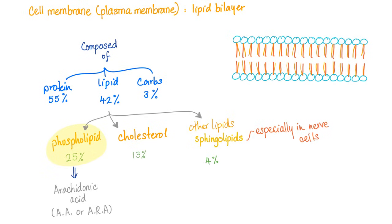As you know, the lipid bilayer plasma membrane, or cell membrane, is composed of proteins, lipids, and carbohydrates. Lipids such as phospholipids, cholesterol, and other lipids such as sphingolipids — especially in nerve cells. The phospholipids form the arachidonic acid. So arachidonic acid comes from the phospholipids, which are part of the cell membrane.